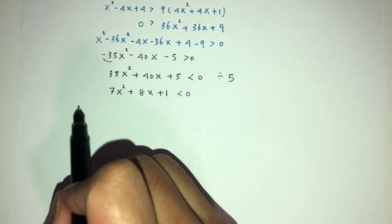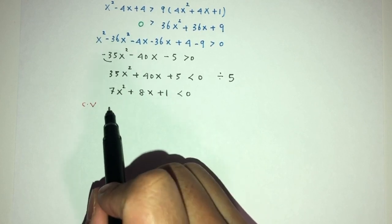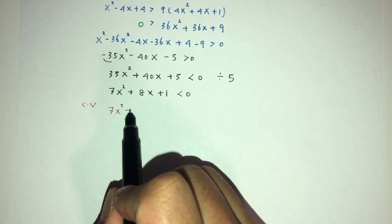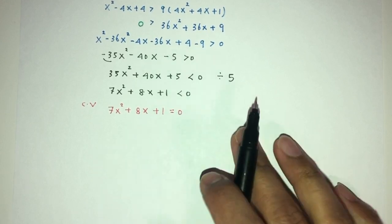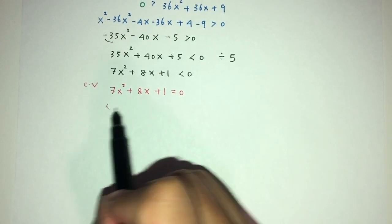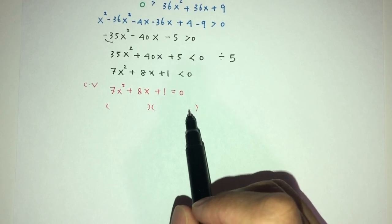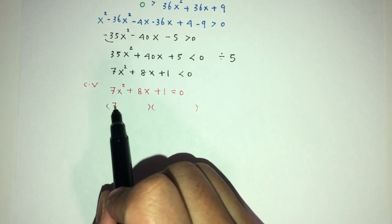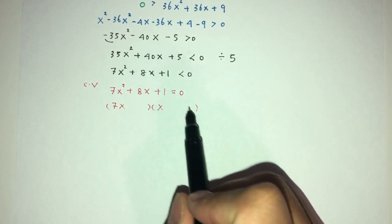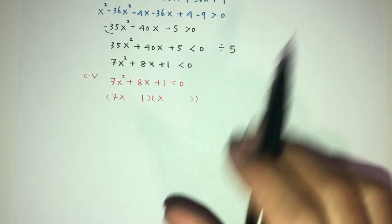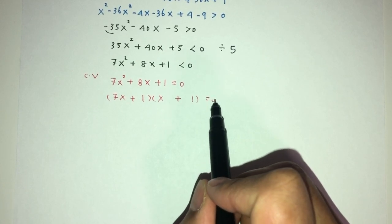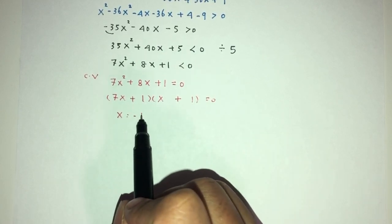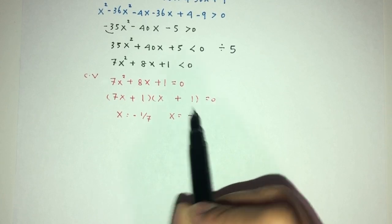So, now we have to find the critical values of x. So, take the same equation and then we have to equate to 0. So, that will be factorization and you will have 7x times x. 1 is 1 times 1 and to have plus 8, we have to have plus 7 plus 1. So, x will be -1/7. x will be -1.